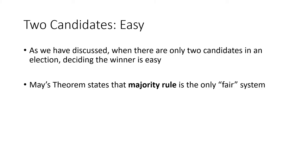We've already talked about the situation when we have two candidates in an election, and the situation is pretty easy. When there's only two candidates, deciding the winner means that we should use majority rule. May's theorem says that majority rule is the only system for two candidates that satisfies all of our fairness criteria.